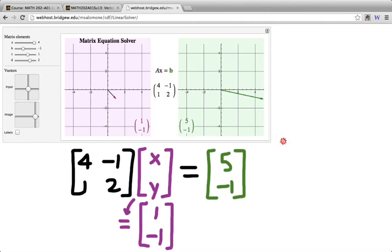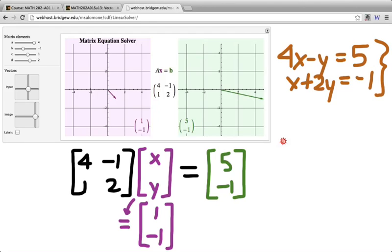In other words, our original system of linear equations, 4x minus y equals 5, and x plus 2y equals negative 1. This original system of equations had solution x equals 1 and y equals negative 1. In other words, by solving for this single purple vector, we have found in its coordinates the solutions for the two variables, x and y, 1 and negative 1.